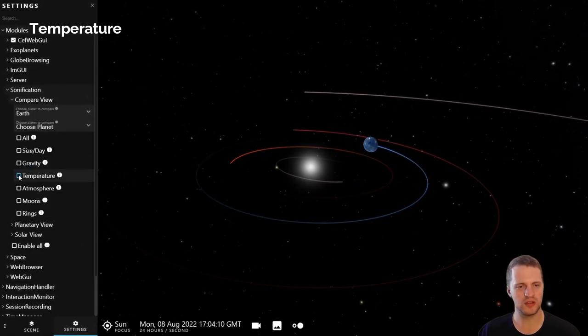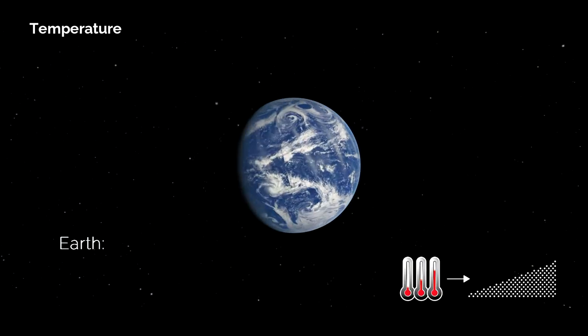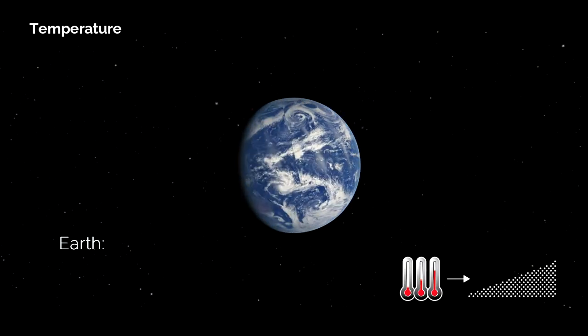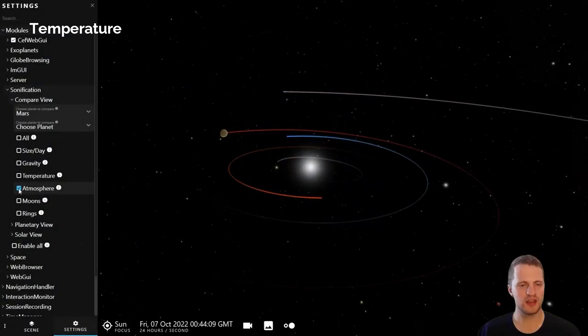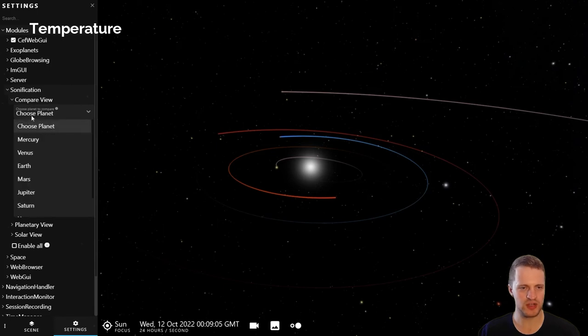So we start by listening to Earth. And next is Venus, which has the highest temperature in the solar system, and also has no temperature change.